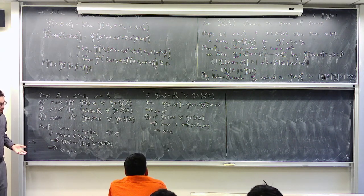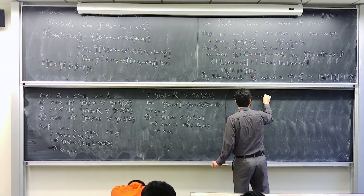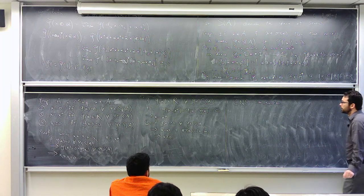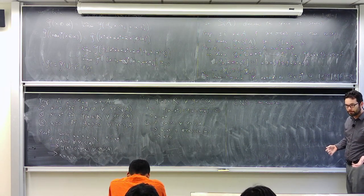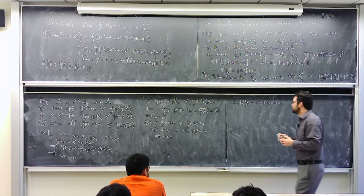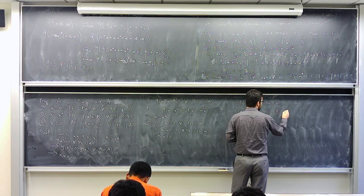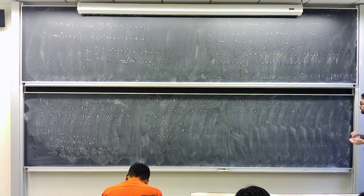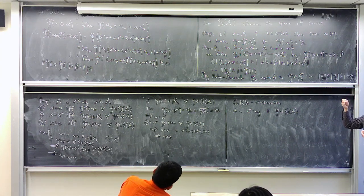So why is it useful that we have so many states? Because states can be associated to representations. This is the GNS construction, standing for Gelfand, Naimark, and Segal, who first introduced it. This is a very powerful tool which appears over and over in many different forms.